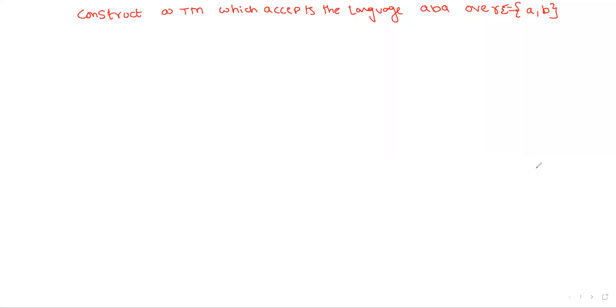Hi friends, welcome to our channel. In this session we will construct a Turing machine which accepts the language aba over the input alphabets a, b. The tape is in this format: the tape contains a b a followed by blank symbols.